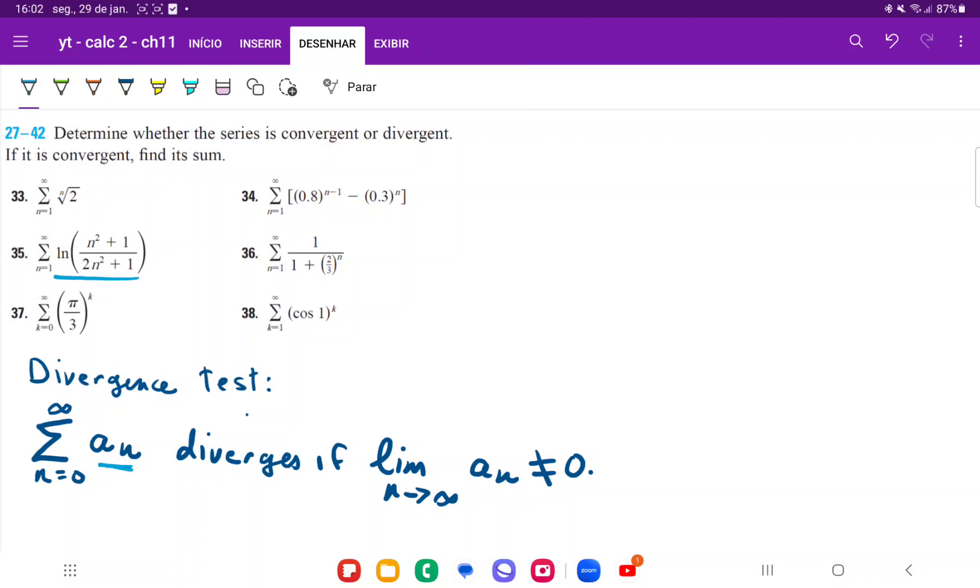And the reason is because you're going to essentially be adding these terms infinitely. However, these terms aren't zero. So necessarily with each added term that you're adding, it's going to make your sum go somewhere else.